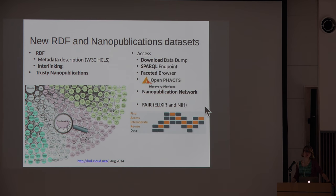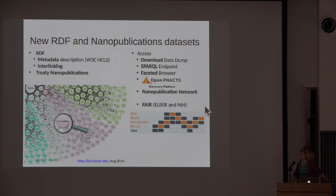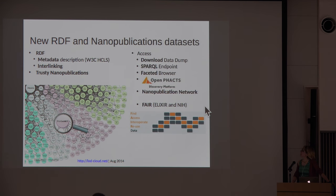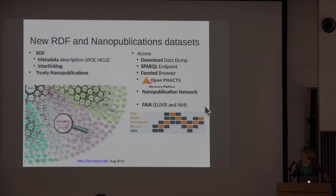This new release also includes a new version of RDF and a new nanopublication dataset. The semantic web resources are accessible as data dumps, via a public SPARQL endpoint, and a faceted browser — our triple database is Virtuoso. We are also on the OpenFAQs platform, and our nanopublications represent the second nanopublication dataset loaded to the nanopublication network. Importantly, we are FAIR — principles that are important for projects like Elixir and NIH.